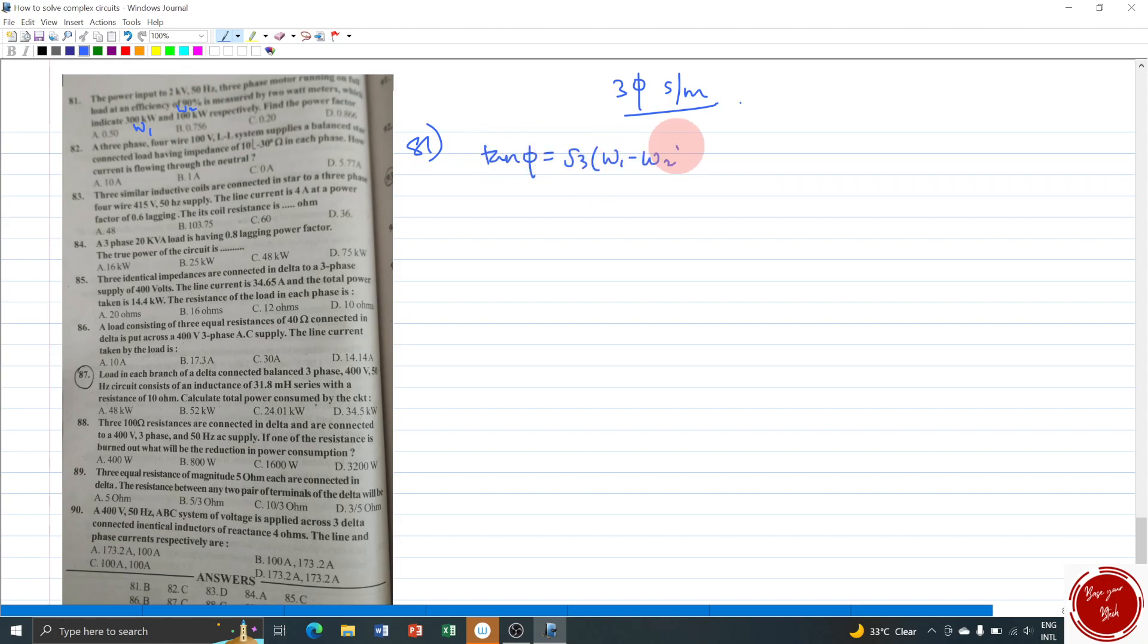Two readings are given, let us put the highest reading as W1 and least as W2. Putting on this equation, we have to find the power factor and what is power factor? It is cos phi. Before you get cos phi, let us find out what is the value for tan phi. Substituting the W1 W2 values over here we get root 3 times 300 minus 100 divided by 300 plus 100. It comes about 200 divided by 400. It is root 3 by 2. Tan phi is root 3 by 2.